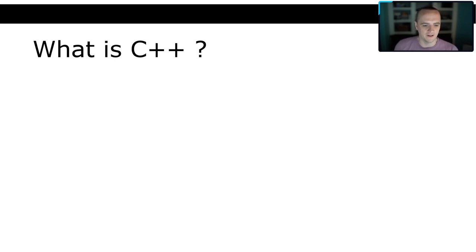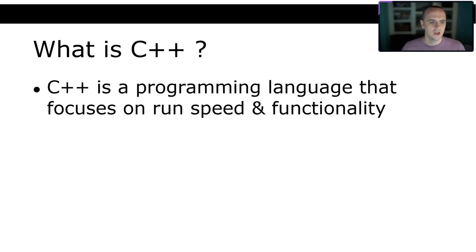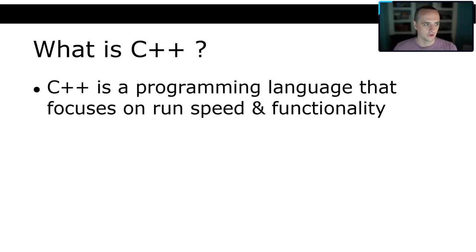It's a little different from that analogy in that you can do a lot of different things with C++, Java, or Python. But there are definitely use cases where you'd want C++ versus Python versus whatever. C++ is a programming language that focuses on run speed and functionality. Programs written correctly in C++ are going to be very fast and functional. However, programs written incorrectly in C++ are going to be very slow — you have to know what you're doing to get the speed out of C++.